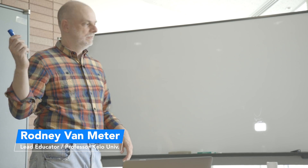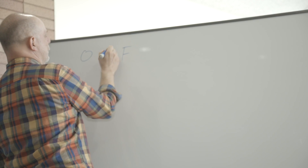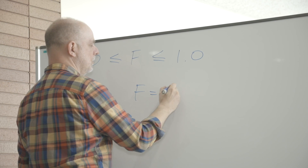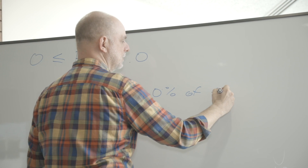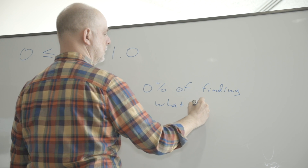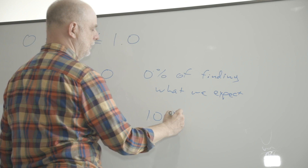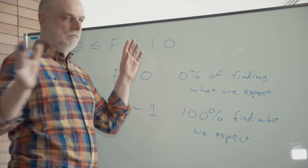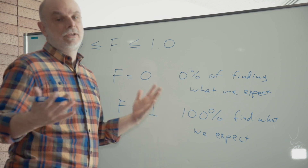Somebody asked about fidelity and what it represents. Fidelity, which we represent using the capital letter F, must be somewhere between 0 and 1. F equals 0 means there is a 0% chance of finding what we expect. Fidelity equals 1 means there is a 100% chance we'll find what we expect — not that we can always predict the exact value, but that if we took a bunch of measurements, we would find exactly the distribution we're expecting.